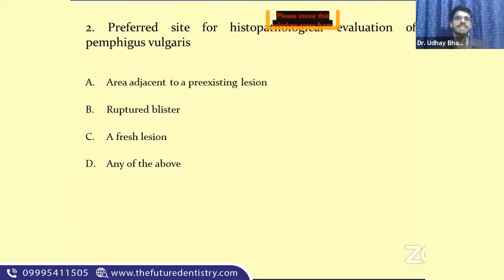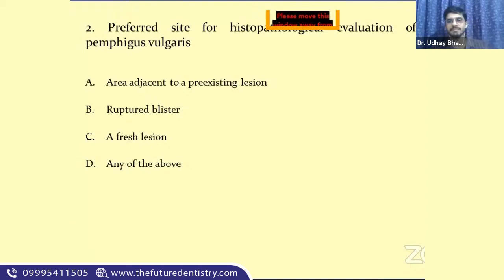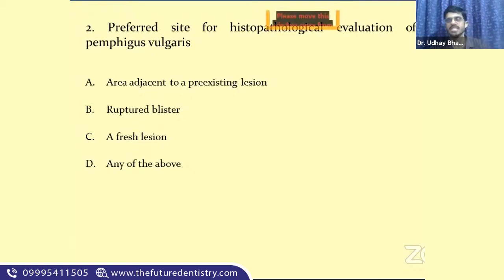The test also known as the bulla spread phenomenon is the Asboe-Hansen sign. The dissociated cells seen in vesiculobullous lesions are called Tzanck cells. Special stains to visualize Tzanck cells include Giemsa stain, methylene blue, Papanicolaou staining, and toluidine blue. Neoplasms commonly associated with paraneoplastic pemphigus — the most important answer is non-Hodgkin's lymphoma. Always read all options carefully, as sometimes multiple correct answers exist, but you should select the most appropriate one.